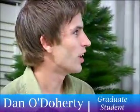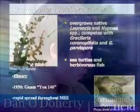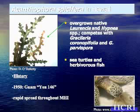I'll just do a quick review of Acanthaphora here in Hawaii. It was believed to be introduced in 1950 from Guam on a whole fowl barge. It spread within about a year's time throughout all of Oahu, pretty much, and through all the main Hawaiian islands within a decade. It's known to overgrow some native species of limu here and is eaten by a variety of herbivorous fish and sea turtles as well.